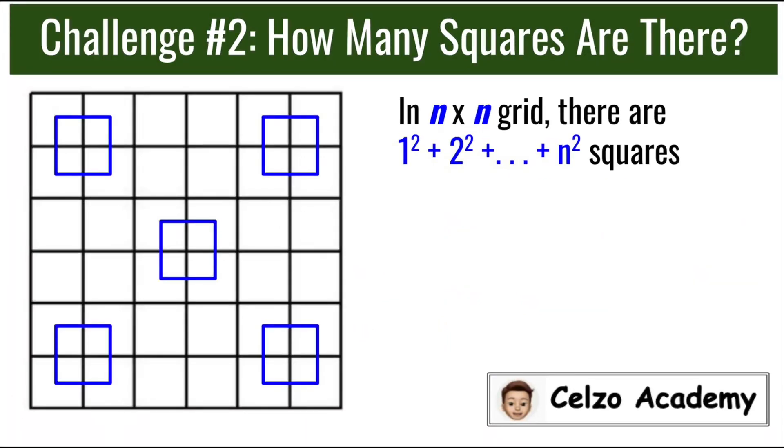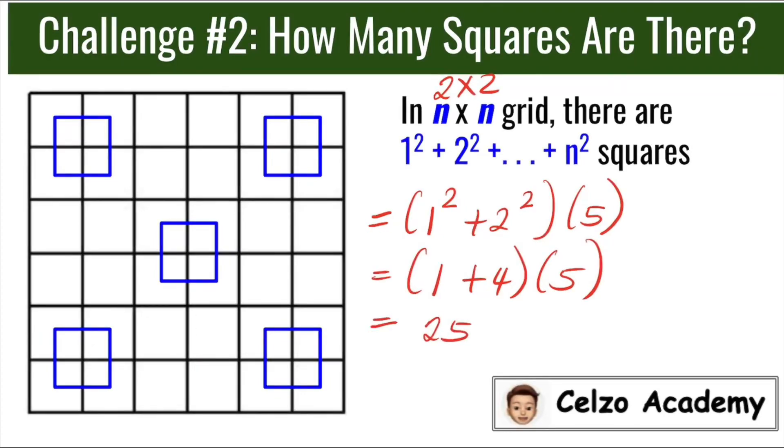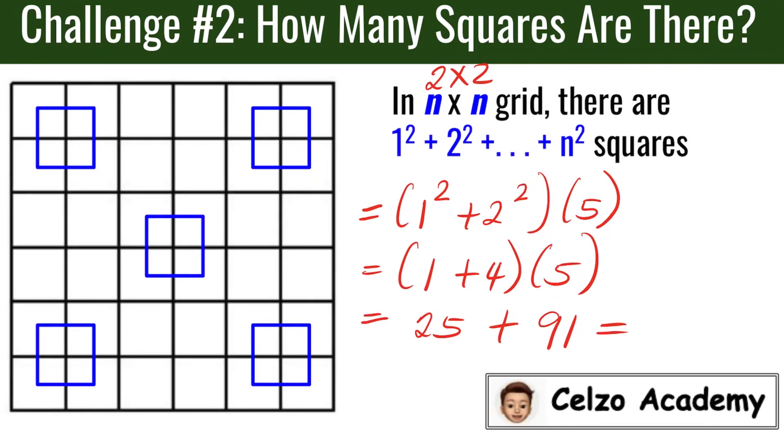Now let's put back the 5 smaller squares inside the big square. For each 2 by 2 grid, we will do 1² + 2². And since there's 5 of them, we will multiply this by 5. Simplifying this, we have (1 + 4) times 5, which is equal to 25. And to get the final answer, we need to add 25 and the previous answer 91. 25 + 91 is equal to 116. So there is a total of 116 squares in this figure.